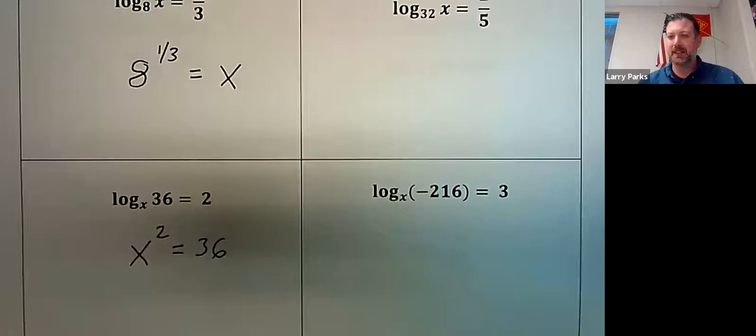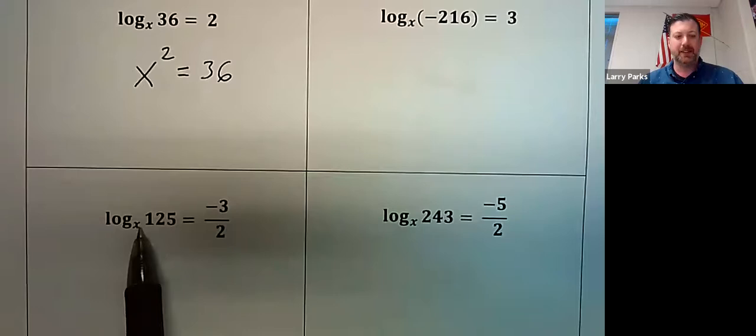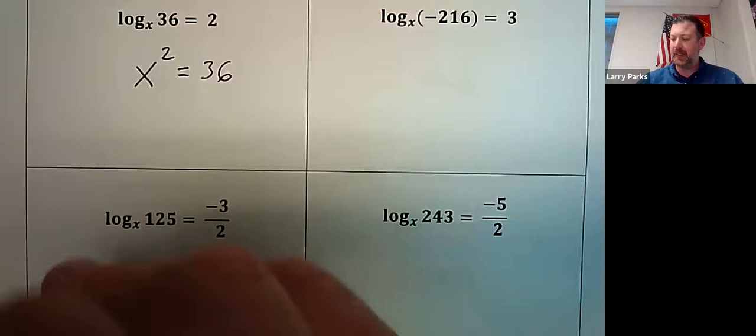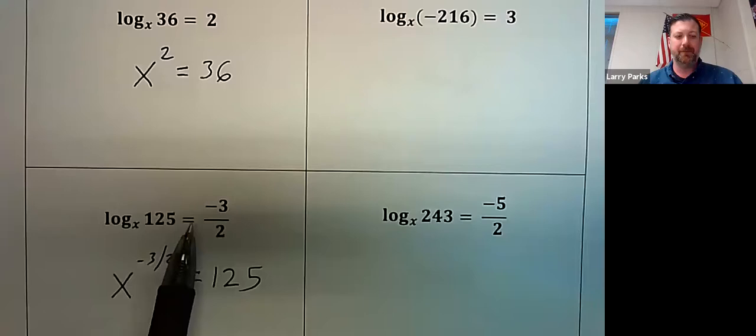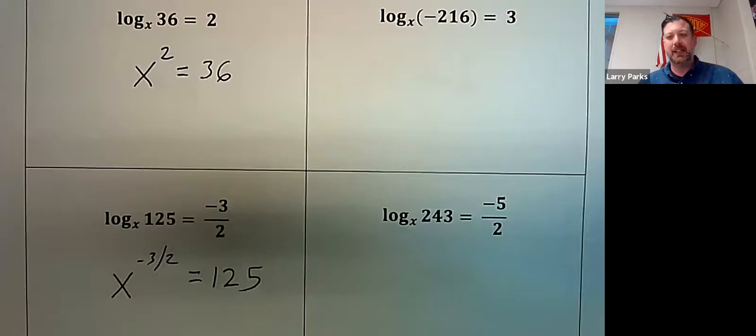The answer to that last one would be 6, because 6 squared is 36 — but we're not solving yet. Another example: base, answer, exponent — log base x of 125 equals negative three-halves means x to the negative three-halves equals 125. All I'm practicing here is how to go from log form to exponential form.